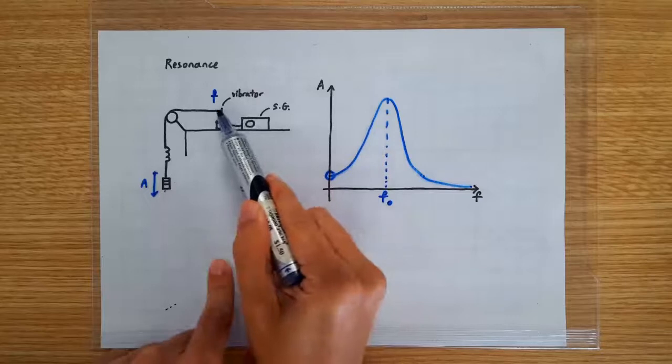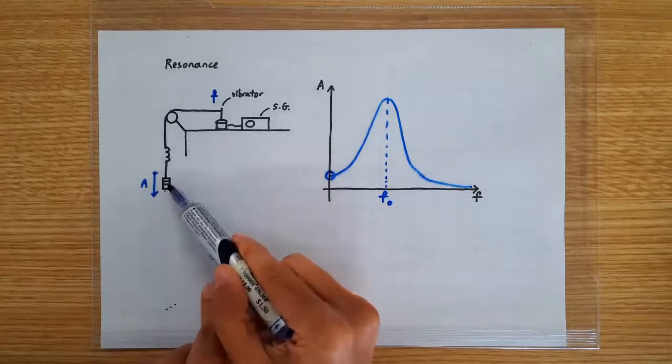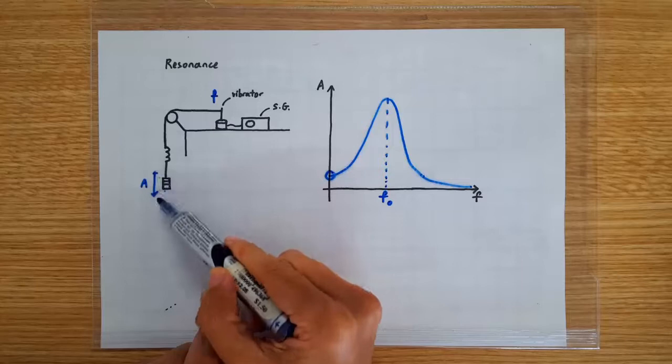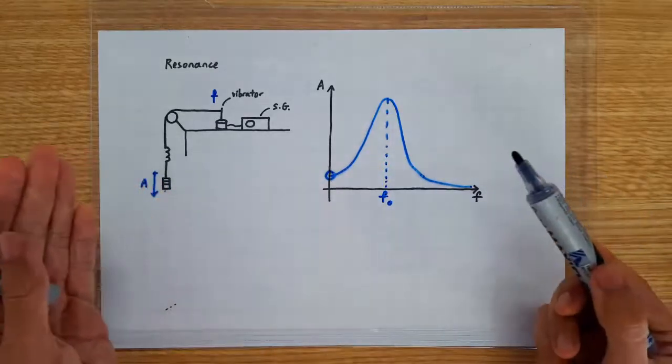Now, since the vibrator is continuously feeding energy into the system, why doesn't the amplitude grow and grow and grow forever until it reaches infinity?